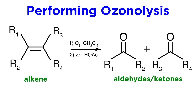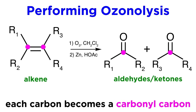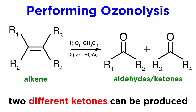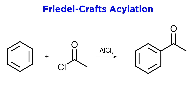Another interesting method for producing ketones is ozonolysis. If ozonolysis is performed on a heavily substituted alkene, the carbon-carbon double bond will be cleaved, and each carbon that was participating in the double bond will now be a carbonyl carbon. So two different ketones can be produced in such a reaction.